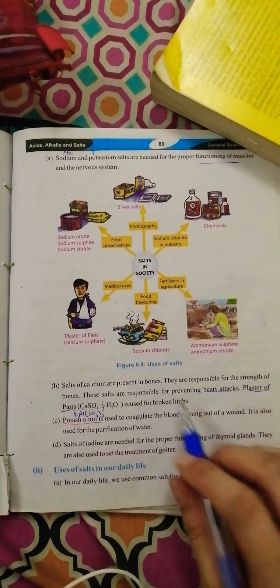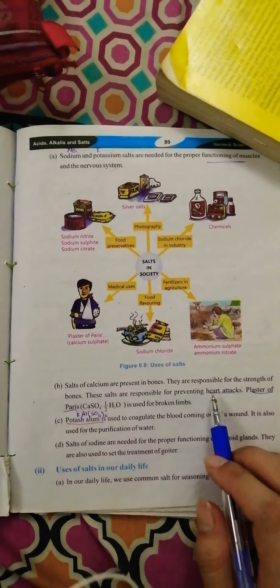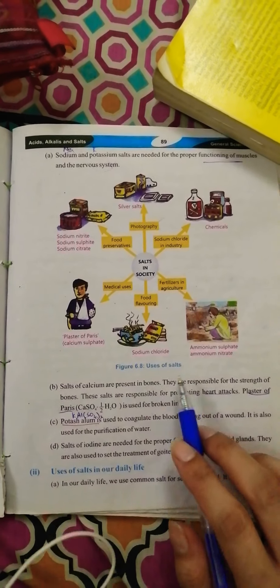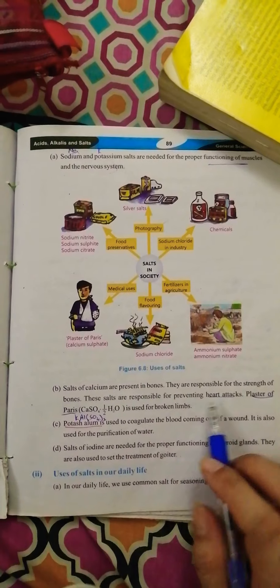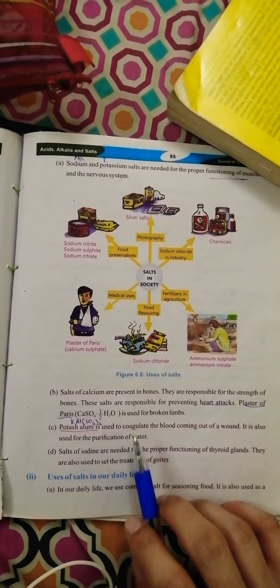It is made up of calcium, so calcium salts are needed by the bones for their strengthening and also for preventing heart attack and for repairing with plaster of paris.